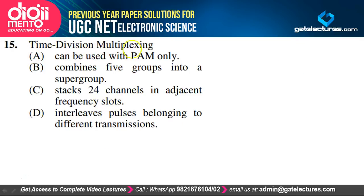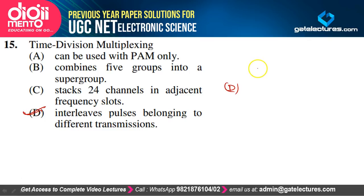Question 15: Time division multiplexing interleaves pulses belonging to different transmissions — option D is correct. TDM is the process of sending samples from different streams on a single channel. Multiple signals are sampled individually and sent over the channel at particular time intervals. Option D is the correct answer.